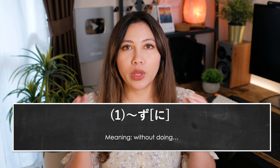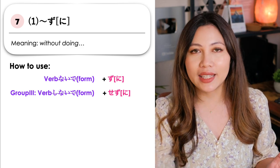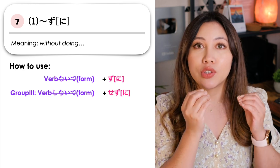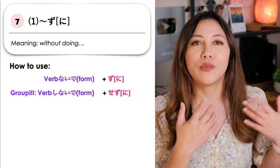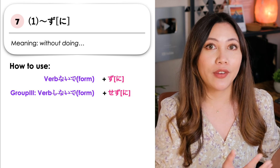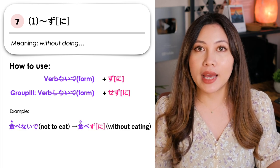Our next grammar point is nani-nani zu ni. This is similar to verb naide, meaning 'without doing verb nani-nani.' But nani-nani zu ni is used more in writing and is more formal. We have the verb in naide form; we simply remove naide and replace that with zu or zu ni. Sometimes we can remove ni. So: verb zu ni means 'without doing verb.' For example, tabe naide — without eating — we say tabe zu ni.